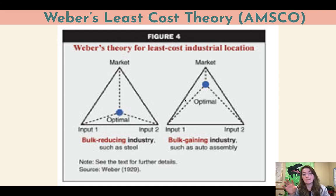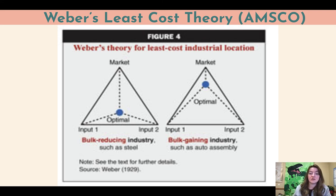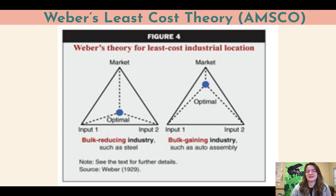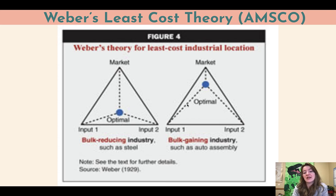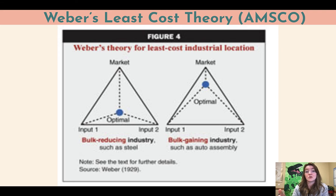A bulk gaining industry is one where the inputs weigh less than the final product — for example, auto assembly. All the inputs going into making cars — the tires, engine parts, doors, the frame — each individually weighs way less than that final car. The finished car weighs way more than all the inputs combined. So in this case, it can be much farther from the inputs because we want to minimize that shipping cost, so we put it really close to the market. Cars are still largely made fairly near where they're sold because they're really heavy and really big — you can't ship a whole lot of them at a time.